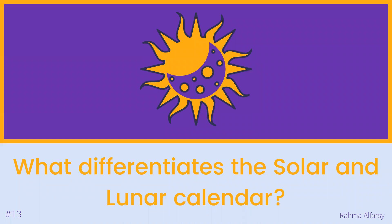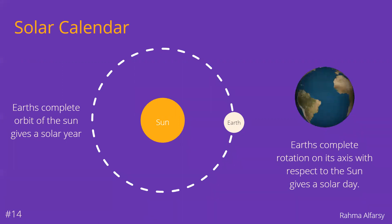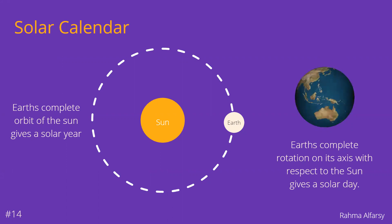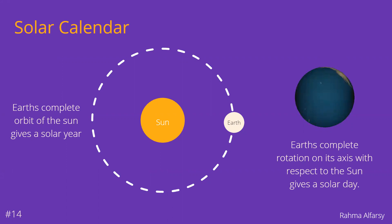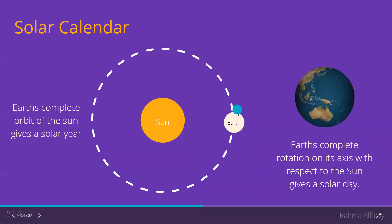Now we know about the orbit and phases of the moon, let's move on to the second question: what differentiates the solar and lunar calendar? From our perspective, the sun travels around the sky in 24 hours — the time it takes for the Earth to complete one rotation on its axis. One solar day is actually a rotation of 361 degrees, because the Earth has orbited around the sun during this time, so its relative position has incremented. A solar year is the time it takes for the Earth to orbit around the sun, which is 365 days.